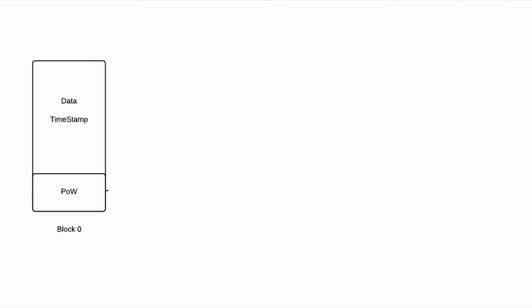So, the first thing — proof of work. I'm going to show you how blockchains are made. For example, we have block zero, the very first transaction in our network. We have the data that was recorded on this transaction and the timestamp when this data was recorded. All together, they will form something called proof of work, which is the signature of the first block.